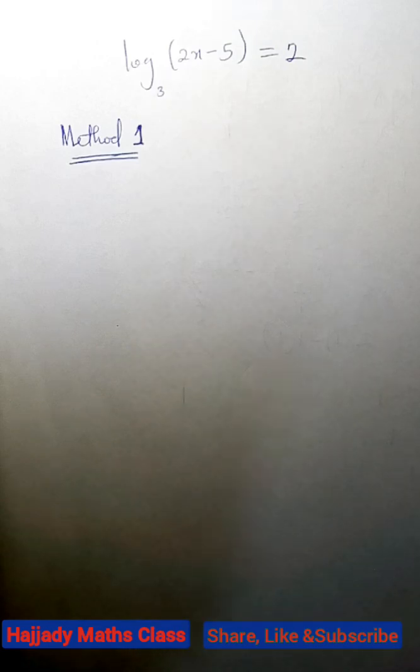Looking at this, we have log base 3 of 2x minus 5 equals 2. For us to do this, we are going to apply the laws of logarithms. For those of you that have not seen our video on laws of logarithms, kindly check the description link below the video. The link will be uploaded.